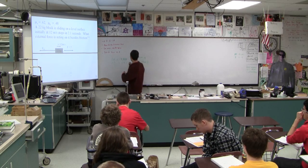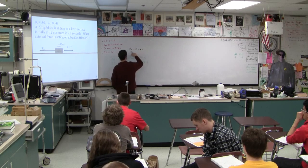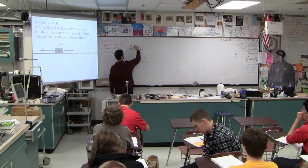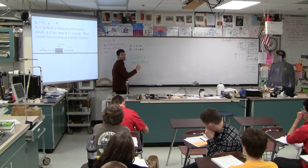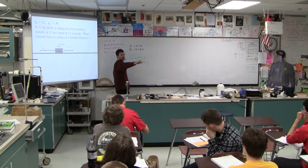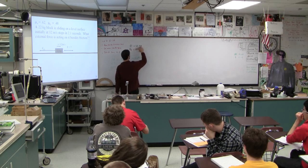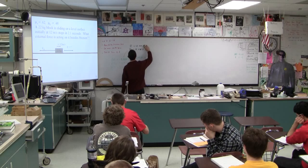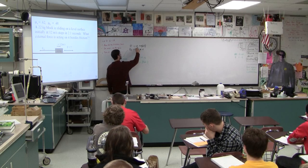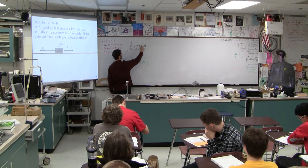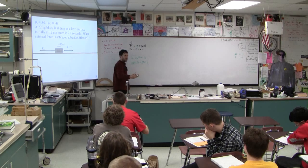We don't even need to think too hard, because we're using V final equals V initial plus AT. The final velocity is 0, and T is 2.1 seconds. When you solve this, the 12 goes over and becomes negative 12, then you divide by 2.1. That's why it's negative — or it's just negative because it's slowing down.